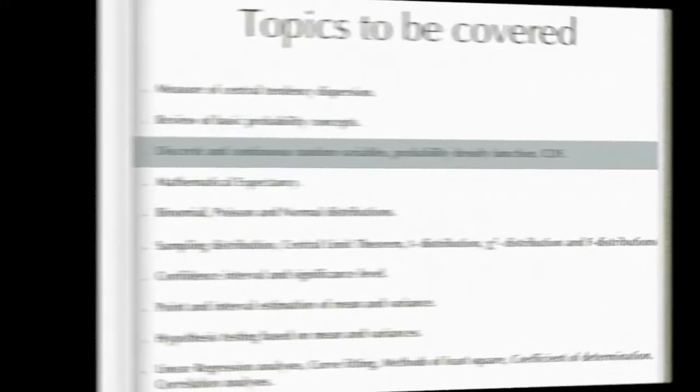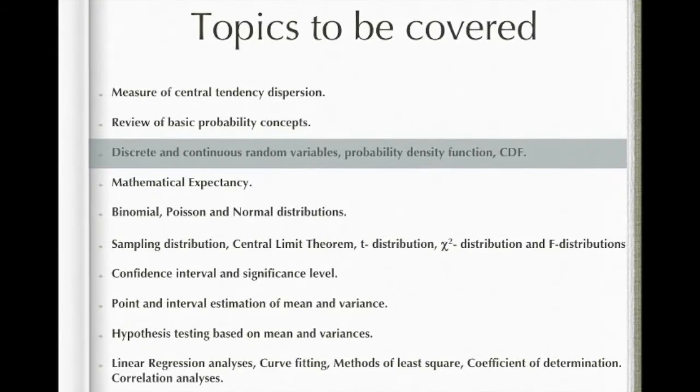But if you measure how far a ball is thrown, then the distance measured would be called a continuous random variable. That is the basic difference between discrete and continuous random variables. In this topic, we will cover discrete and continuous random variables.